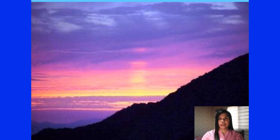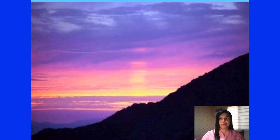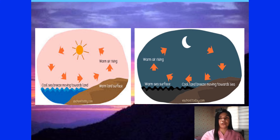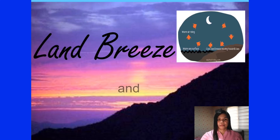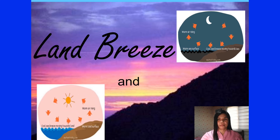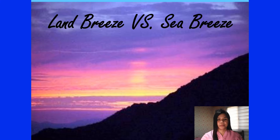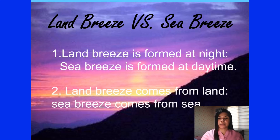Did you see the difference between the two breezes? You can tell the difference between the two breezes by identifying the time when each type of breeze occurs. You can also differentiate the two breezes by tracing the source of each, or the place where the wind originates. Take a look closely at the two diagrams. Land breeze is formed at night, while sea breeze is formed at daytime. Land breeze comes from land; sea breeze comes from the sea.